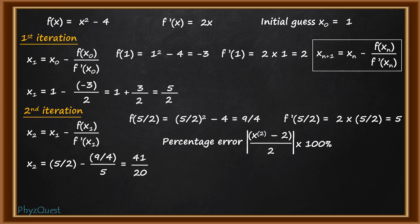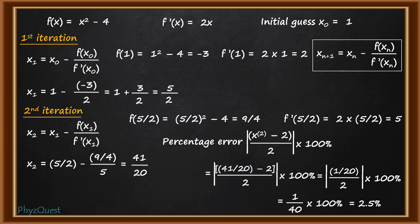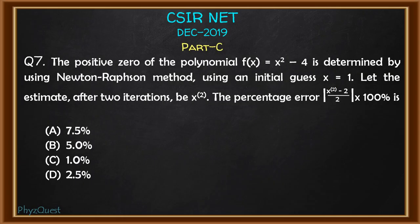Putting the value it will be equal to |(41/20 - 2)/2| × 100 which will be equal to |(1/20)/2| × 100 which is (1/40) × 100 which is 2.5%. This is the percentage error, 2.5% after the second iteration. Now let's check the option. If you look at the option you can see that option D is matching with our calculation. The correct answer for this question is option D.